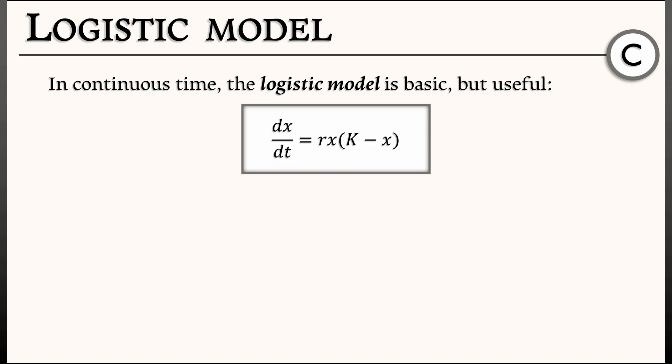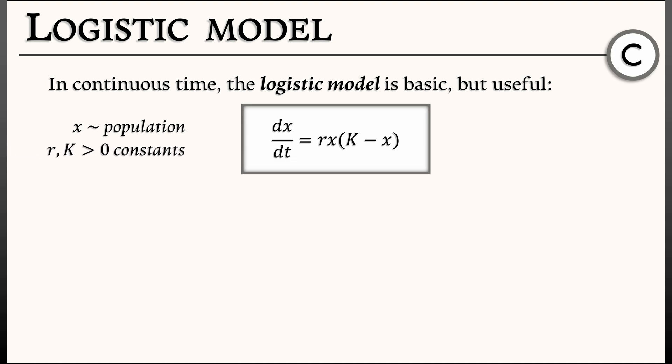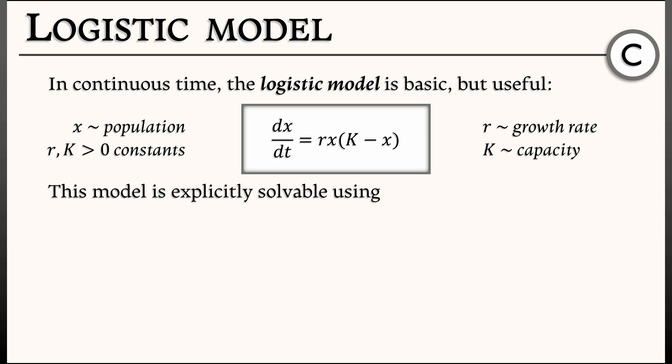The model is: dx/dt equals r times x times the quantity (k minus x). Here, x as a function of time t is a population size, and r and k are positive constants. Roughly speaking, r is like a growth rate or a reproduction rate, and k is something called a capacity, sometimes a carrying capacity. We'll see why later.